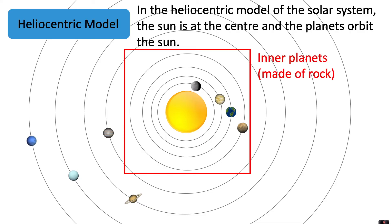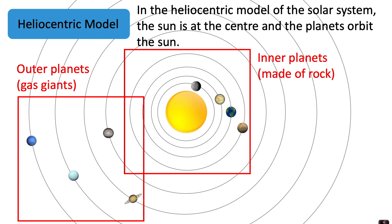The inner planets Mercury, Venus, Earth and Mars are made of rock and the outer planets Jupiter, Saturn, Uranus and Neptune are gas giants.